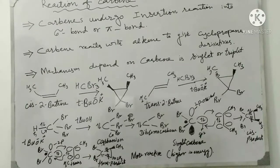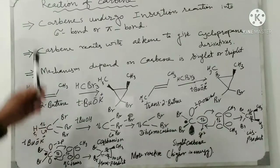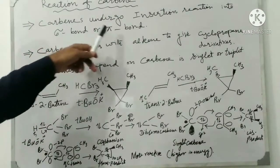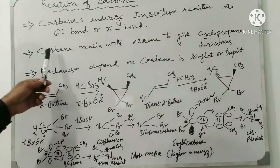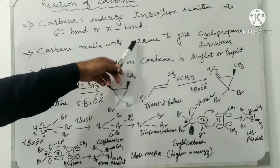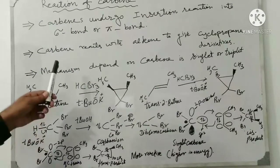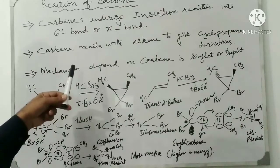Hello viewers. In this lecture we will discuss the reaction of carbene. Carbene undergoes insertion reaction into sigma bond or pi bond. This is the first point. Carbene reacts with an alkene to give cyclopropane derivatives, and the mechanism depends on whether carbene is singlet or triplet.